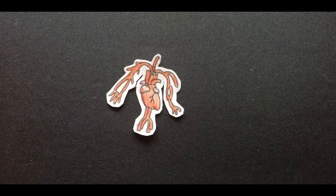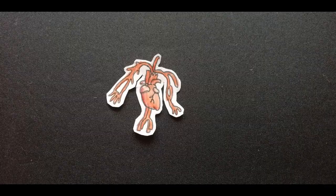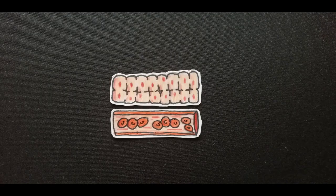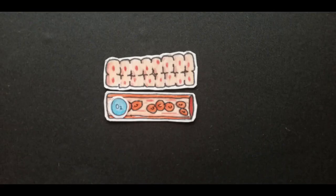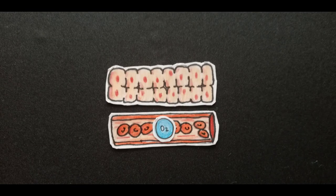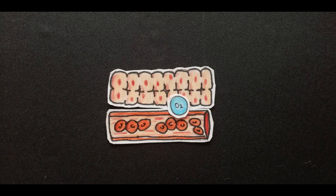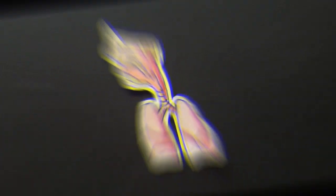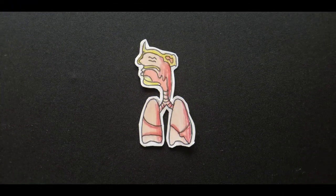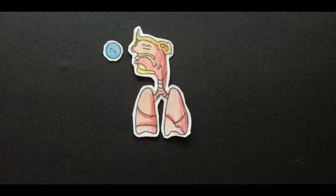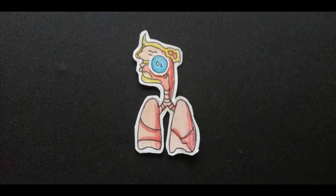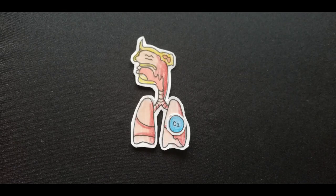The circulatory system circulates blood to other cells giving oxygen and sugars like glucose, where they are transported through the heart. The respiratory system breathes air to extract oxygen that later is transported to the blood while carbon dioxide is exhaled.